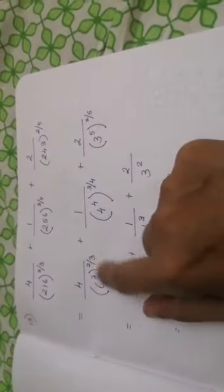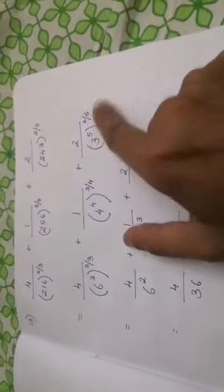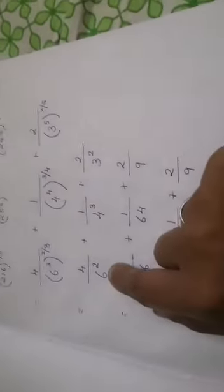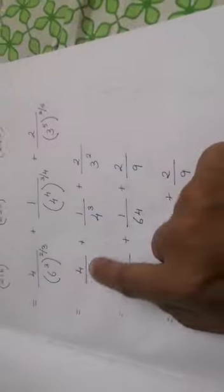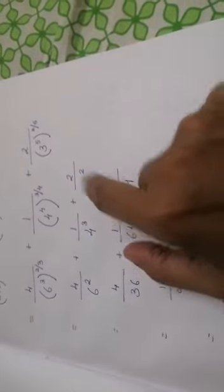Power of power when you use this, 3, 3 will get cancelled. Here 4, 4 will get cancelled. 5, 5 will get cancelled. Now your workout becomes 4 by 6 square plus 1 by 4 cube plus 2 by 3 square.